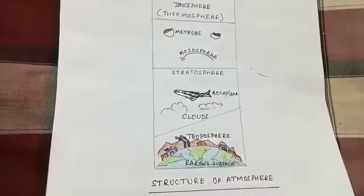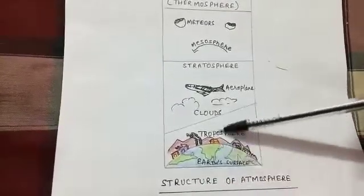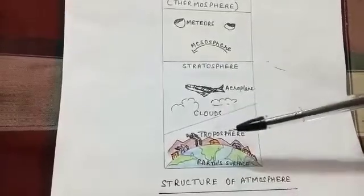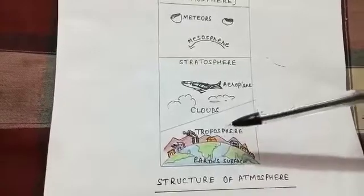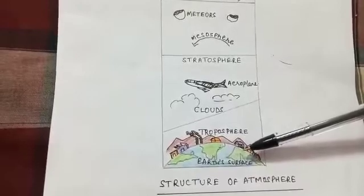Now in this layer the temperature of the air decreases as the height increases. It decreases at the rate of 1 degree Celsius for every 165 meters and this is known as normal lapse rate.